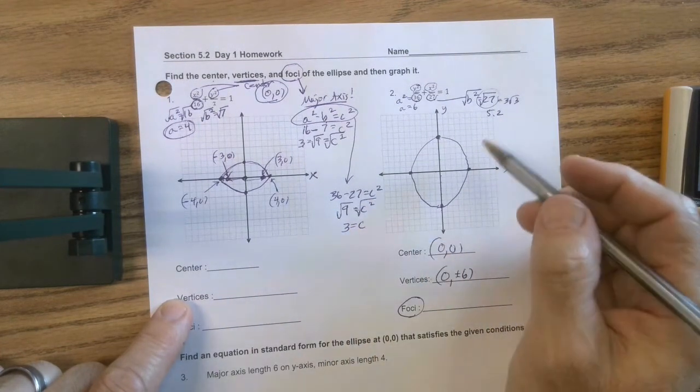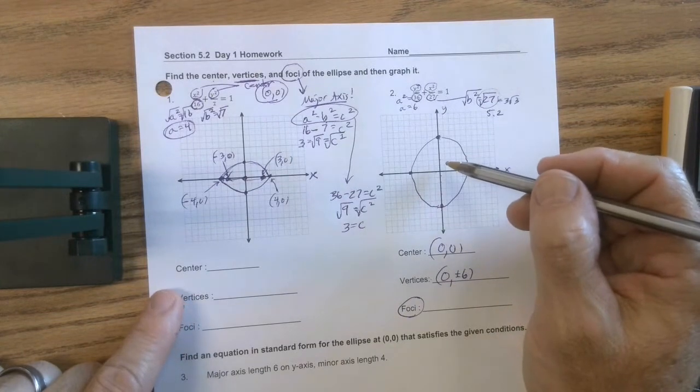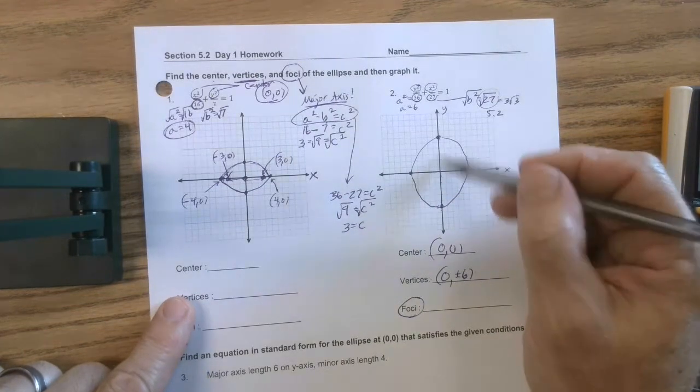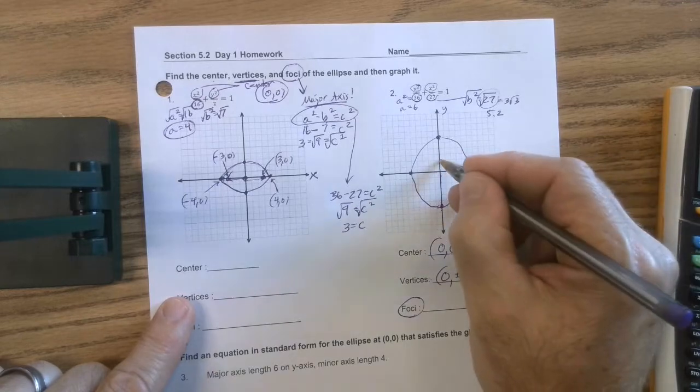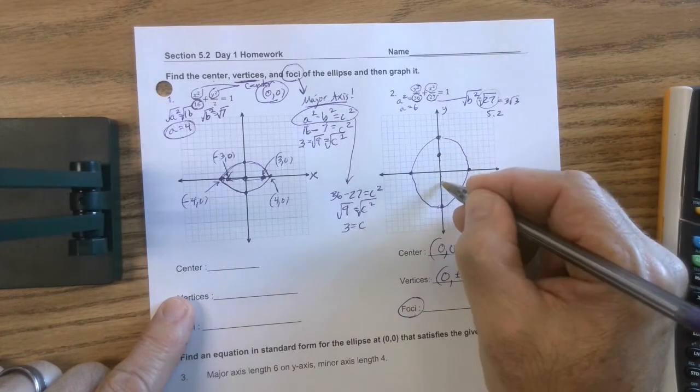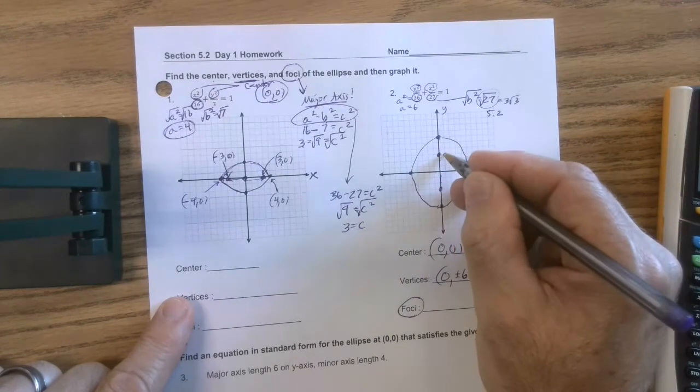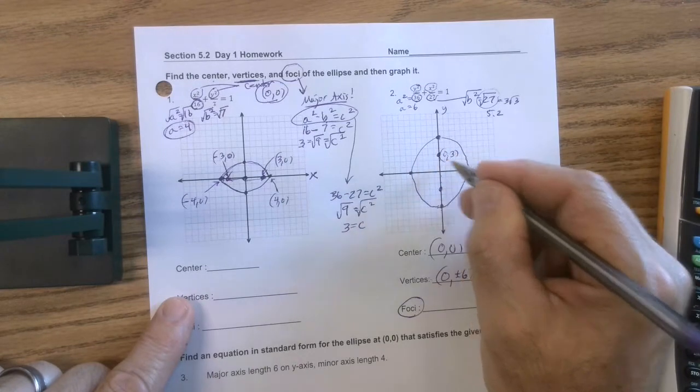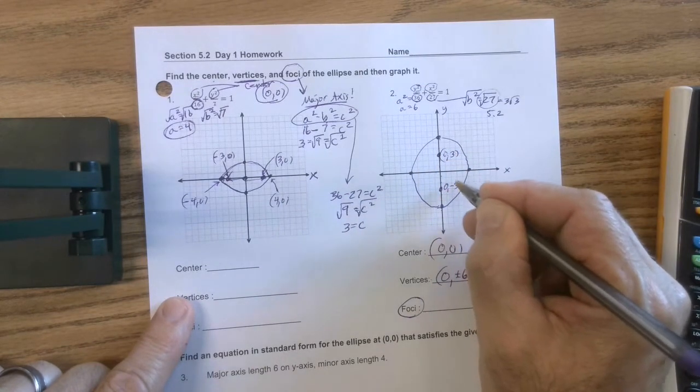But this time, remember the major axis always has the foci on it. And in this case, it would be the y-axis. So that would be up 3, down 3. And now you just need to name them. So that would be 0, 3. That would be 0, negative 3. All right.